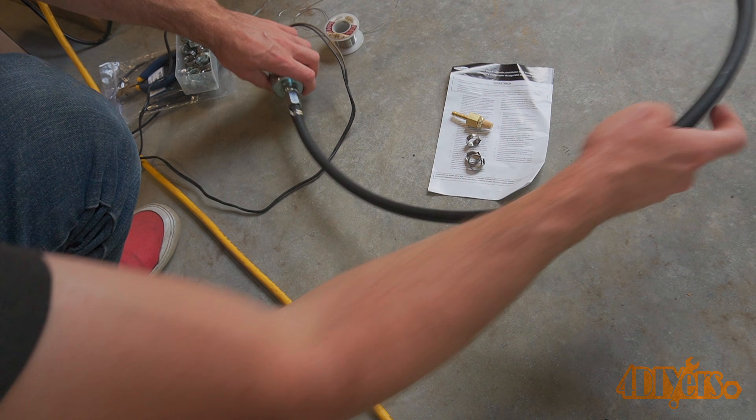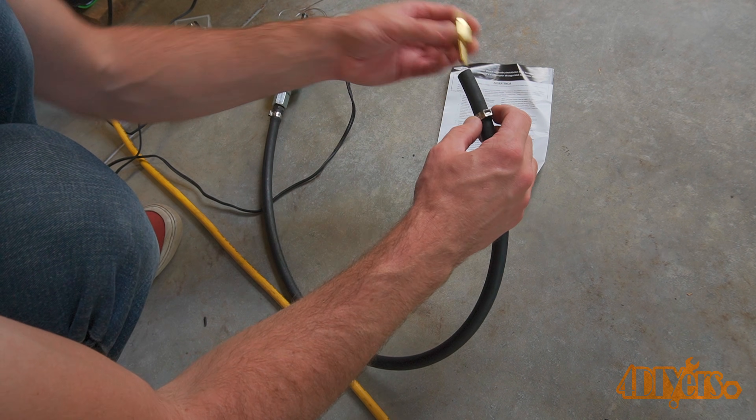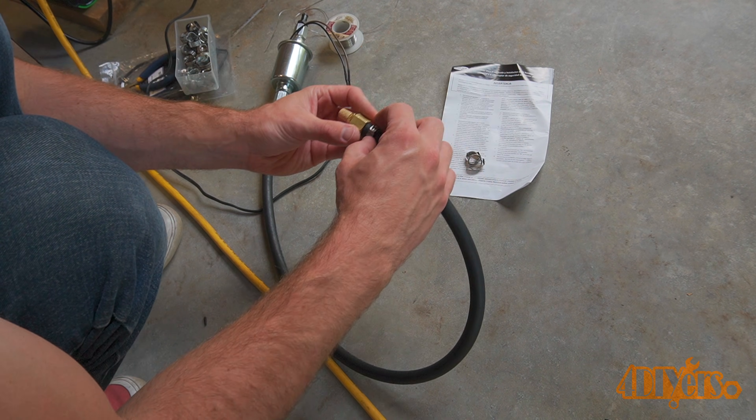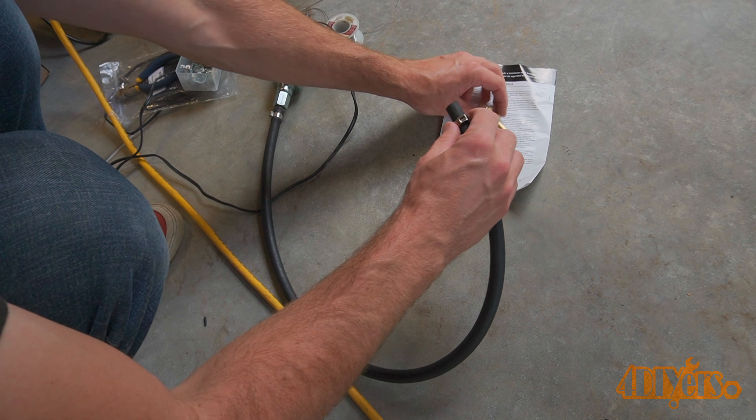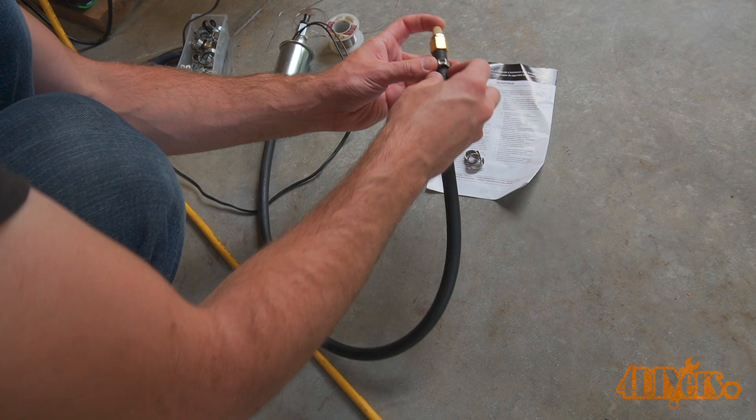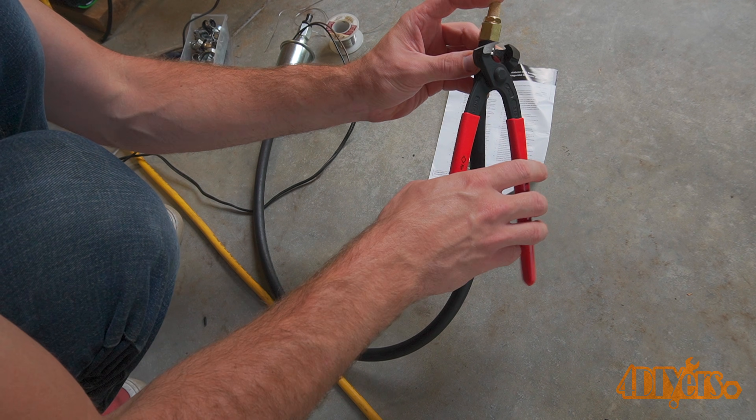This will be a suction line so a brass sintered filter is installed on the end with the hose barb. This also has a hose clamp applied. To determine which is the suction and which is the supply end, this should be printed on the side of the fuel pump casing.